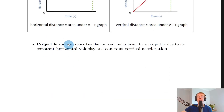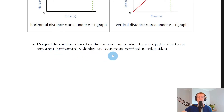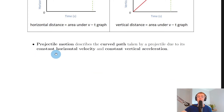Finally, a definition: projectile motion describes the curved path taken by a projectile due to its constant horizontal velocity and constant vertical acceleration. Notice we mention the curved path or trajectory, and the two key parts that make a projectile travel the way it does — constant horizontal velocity and constant vertical acceleration. It's key that you remember these two things.